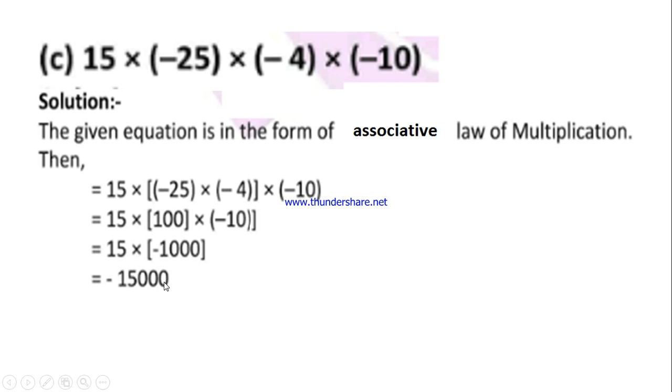See how fast we are finishing this by using the property. If you are not using the property, you have to multiply these two numbers, you will have an answer. Again you will multiply these two numbers, then you will have two answers. Then with those two answers, we have to multiply. It will take time to multiply the big numbers. But if you apply this property, you can find the answer very soon.